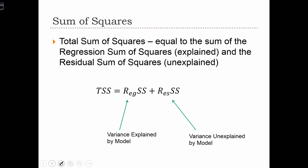Now, the total sum of squares is equal to the sum of the regression sum of squares plus the residual sum of squares. In other words, the total variance of our dependent variable y can be partitioned into variance that's explained by our model and variance that's unexplained by the model.